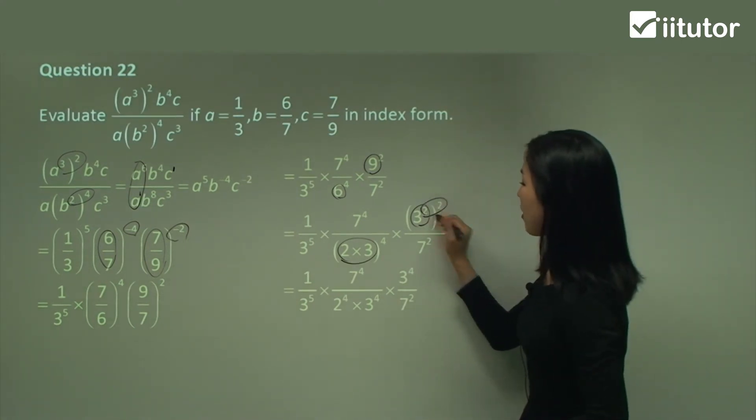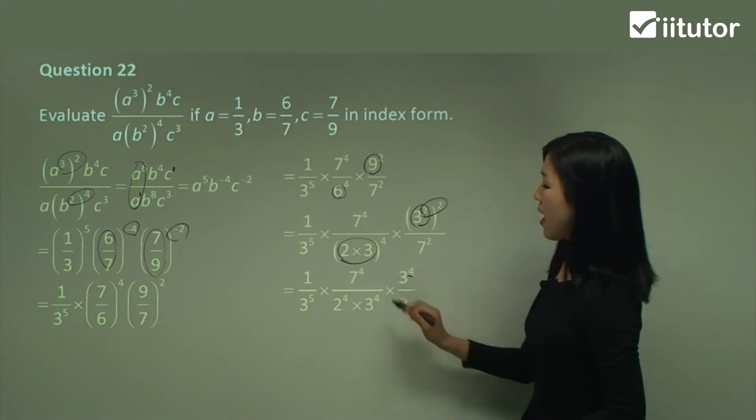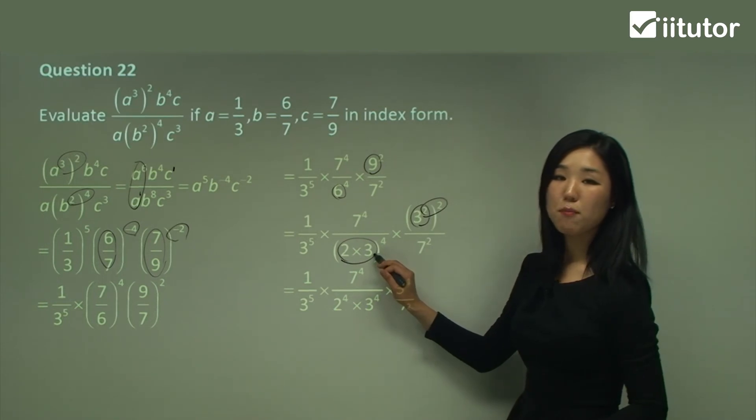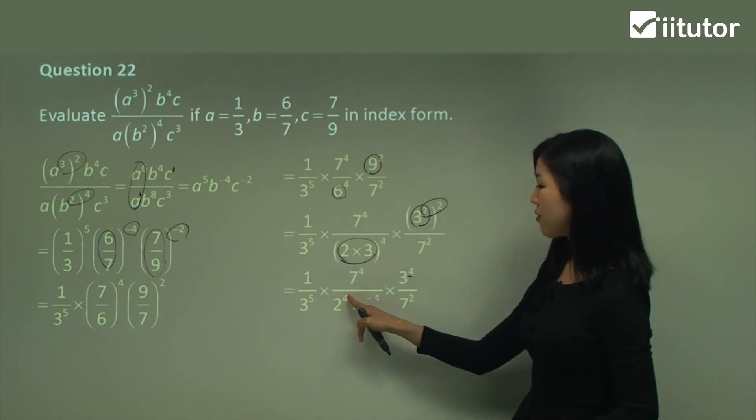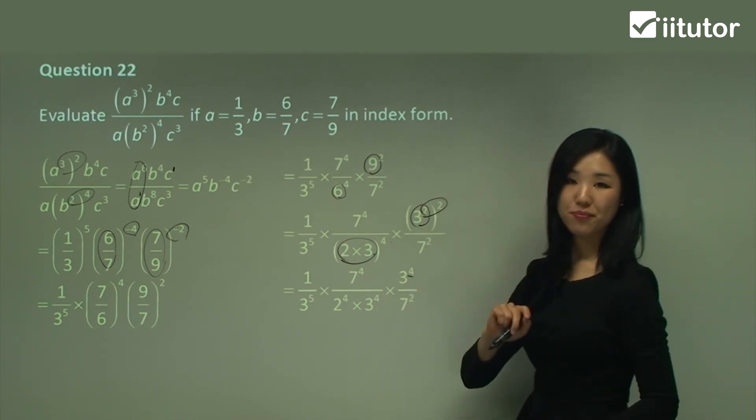So we do 2 times 2 together to make 4. And here, when we're multiplying, you can power the 4 to the 2 and the 3. So it's 2 to the power of 4, 3 to the power of 4.